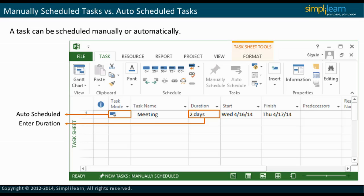If the project manager directly edits the duration, start date, or finish date of an automatically scheduled task, the task will switch to a manual schedule mode. In the next slide, we will learn about the project outline.